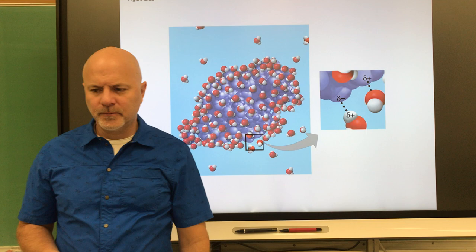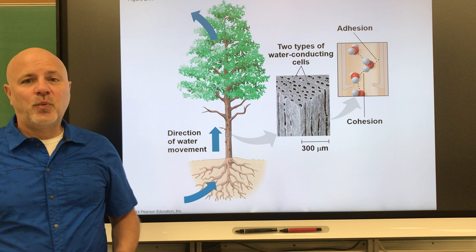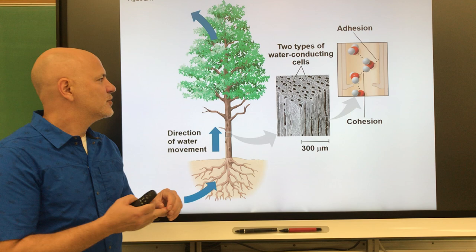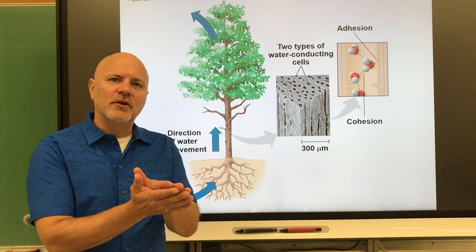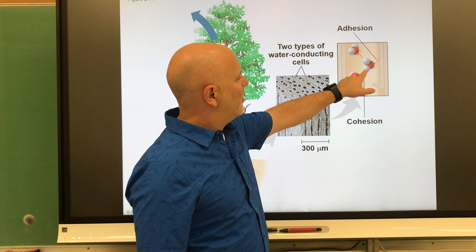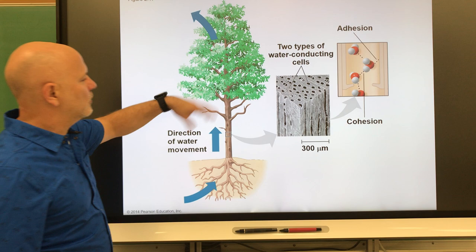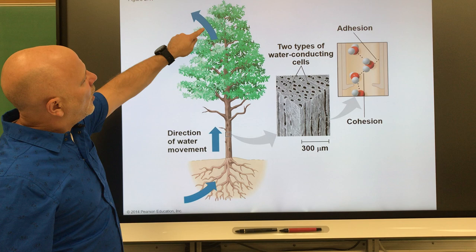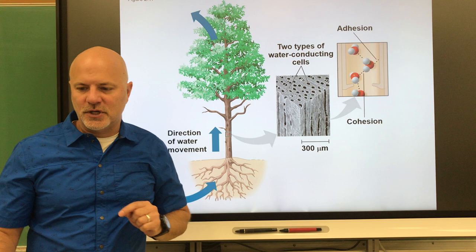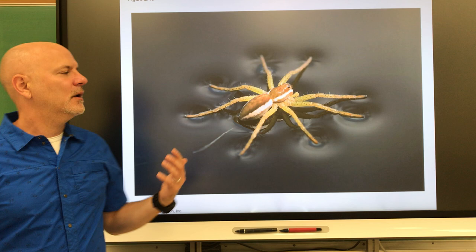Water is cohesive and adhesive. Adhesion is where different things stick together, and cohesion is the tendency of molecules to stick to each other. If you've ever gotten two pieces of paper wet, you can see the adhesive nature of water — they have a tough time coming apart. Because water has a negative end and a positive end, all the water molecules stick to each other. Looking at a tree, when water is lost off the top of the tree, water molecules are absorbed from the ground because they're all connected to each other.